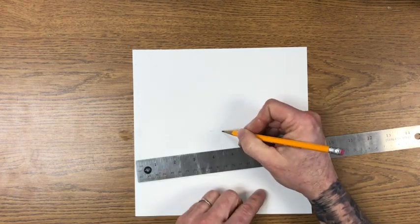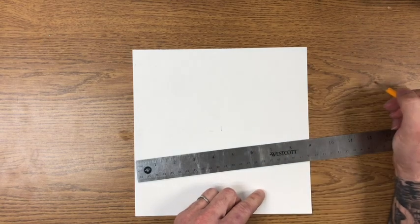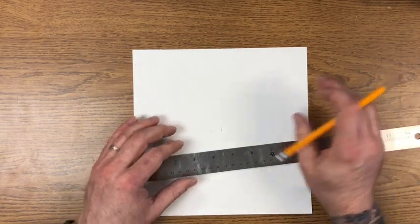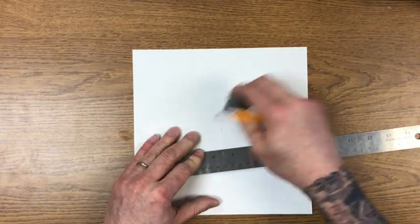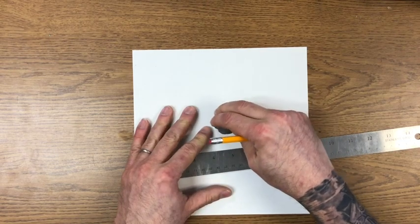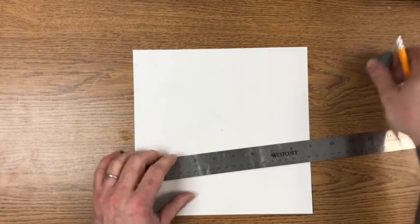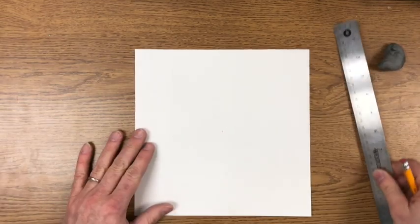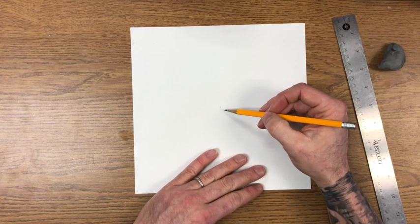Okay, that's the middle of my paper. So I can erase the other lines that I don't need. And if you draw light enough, the lines will go away, no big deal. And now we've got the middle of our paper.